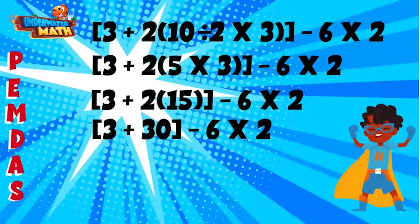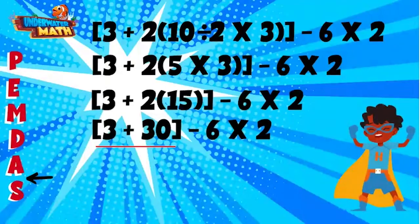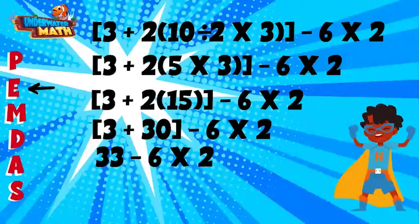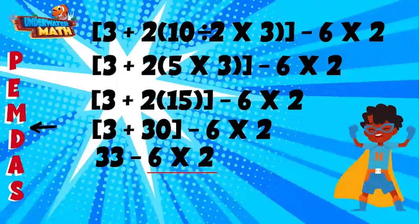2 times 15 equals 30, and we can write the next line. We are still working within our brackets and must finish simplifying before moving outside. We are now on addition and subtraction within the brackets only: 3 plus 30 equals 33. Since we have a single number in the parentheses, we can take away the brackets. Now that our brackets are gone, we start over with the order of operations — we are done with parentheses and we don't have exponents, so we move to multiplication and division.